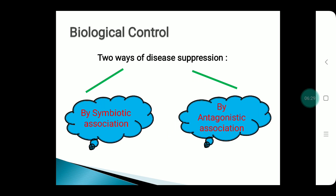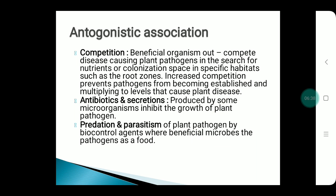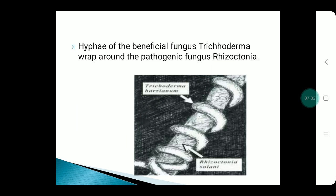Biological control has two ways for suppressing disease: antagonistic association and symbiotic association. Antagonistic association involves competition, in which beneficial organisms compete with the pathogens so they cannot complete their life cycles. Some microorganisms produce antibiotics that inhibit plant pathogen growth. In parasitism, beneficial microbes use the pathogen as a food source. This picture clearly shows the beneficial fungus Trichoderma wrapping around the pathogenic fungus Rhizoctonia.